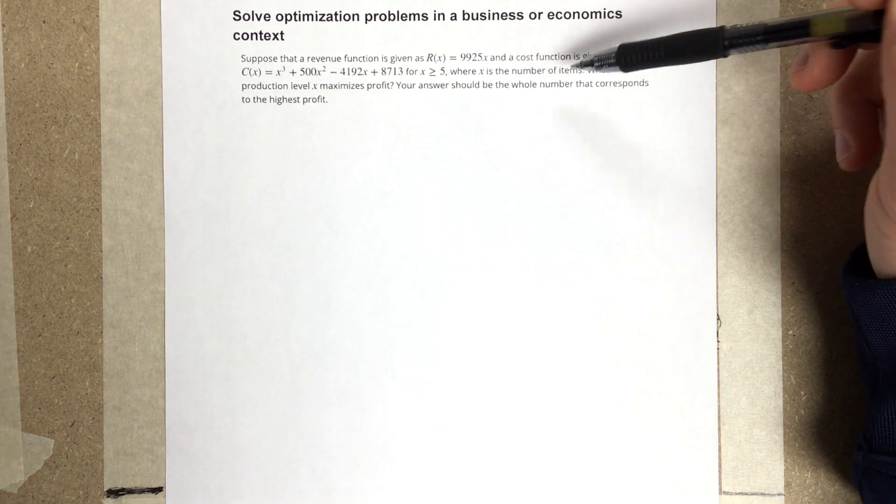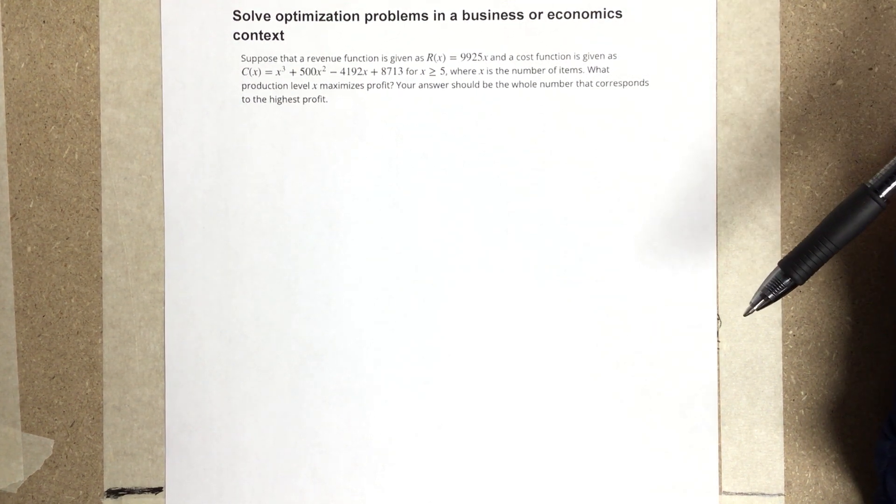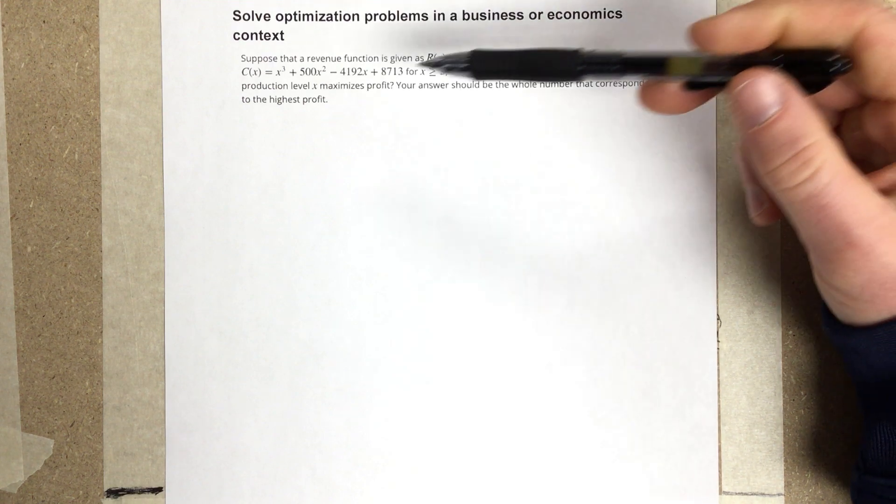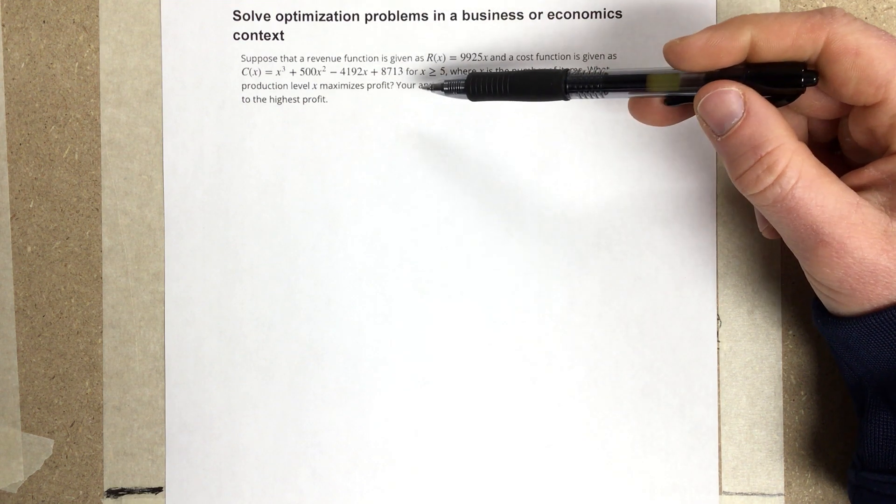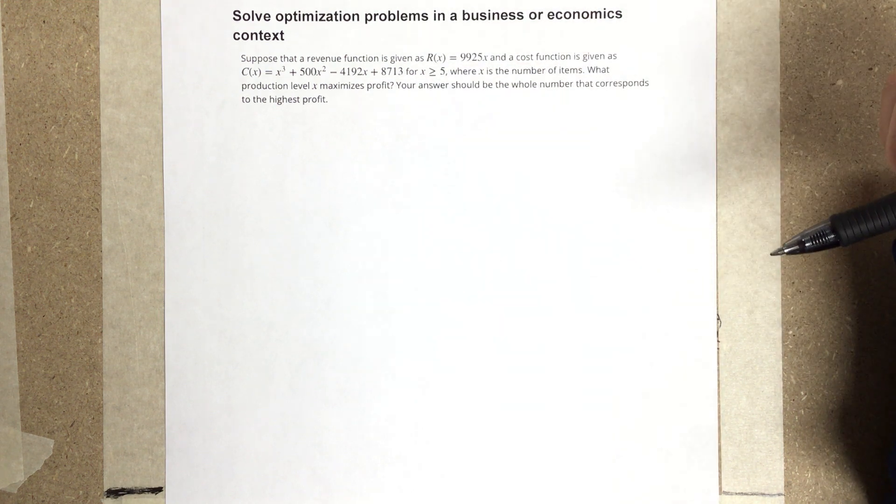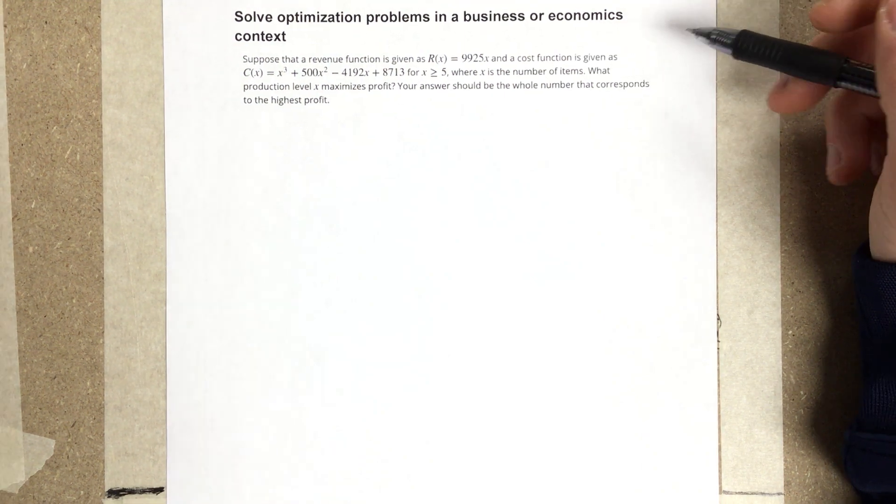x represents the number of items, which means we're going to have to have a whole number of items. We can't have a decimal for this answer. What production level x maximizes profit? Your answer should be the whole number that corresponds to the highest profit. So they want us to maximize profit.